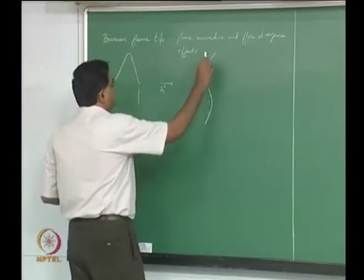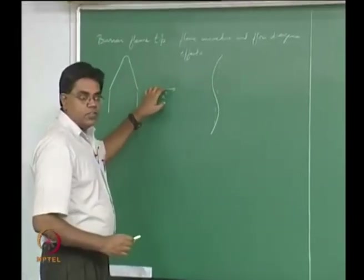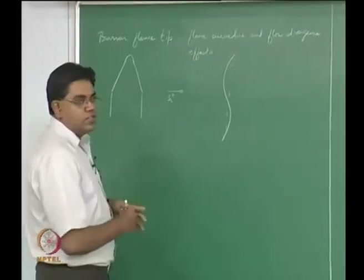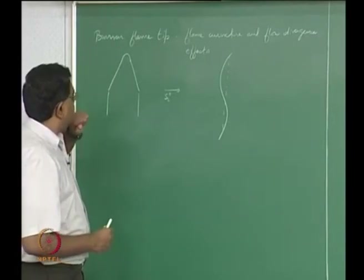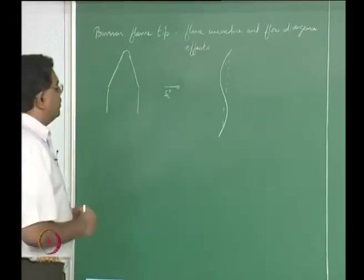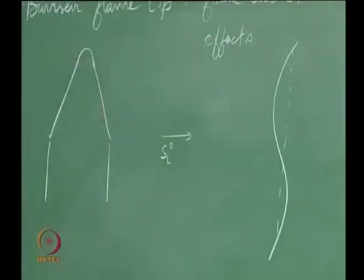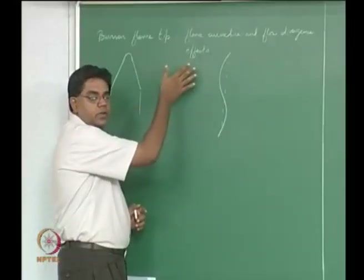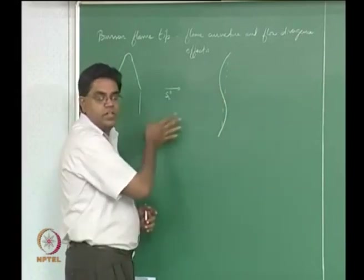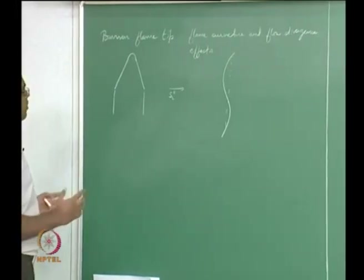Consider a nominally plane flame propagating with flame velocity SL superscript 0. In a flame-fixed coordinate system, the unburnt reactants come in at SL⁰. When we perturb this flame, one part becomes curved convex against the incoming flow and the other part is curved concave relative to the incoming flow. We need to think about what happens to these two parts separately, but we should come to the same conclusion either way.